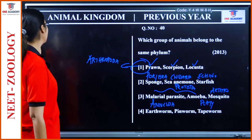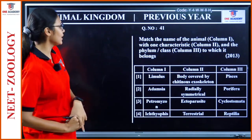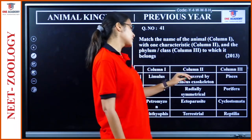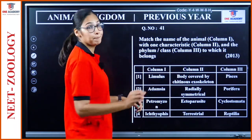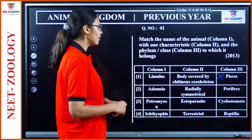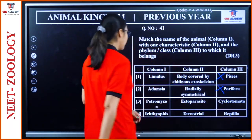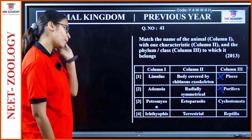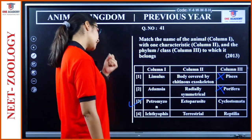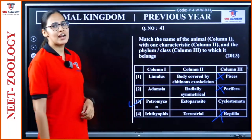Question 41: Match the animal with its characteristic and phylum/class. Limulus — body covered by chitinous exoskeleton — Arthropoda. Adamsia — radially symmetrical — Porifera... no, Cnidaria. Petromyzon — ectoparasite — Cyclostomia — correct. Ethiopus — terrestrial — Reptilia... actually Amphibia — so three is the answer.